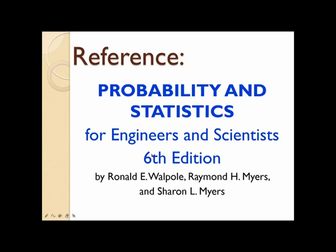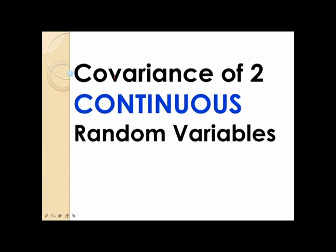The main reference used in coming up with this presentation is the book of Walpole, Myers, and Myers entitled Probability and Statistics for Engineers and Scientists, the 6th edition. In this video, I'll explain the covariance of two continuous random variables.